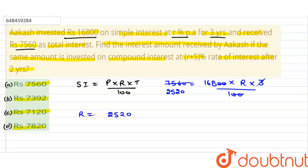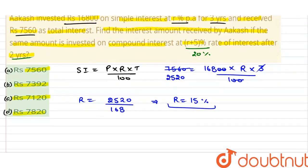2,520 divided by 16.8. इसे solve करेंगे तो rate of interest कितना आजाएगा? 15%. अब rate of interest 15% आया. दूसरी condition में 15 plus 5 कितना हो जाएगा? 20% rate के उपर 2 साल के लिए हमें compound interest निकालना है.